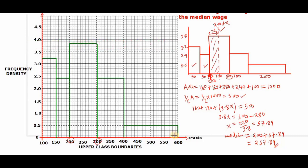So we're going to estimate that in the histogram by drawing a vertical line at that particular position. So where do we have 257.89 on our histogram?